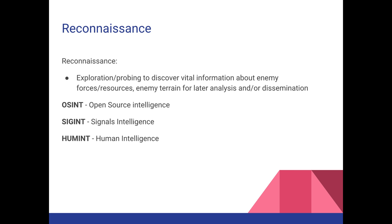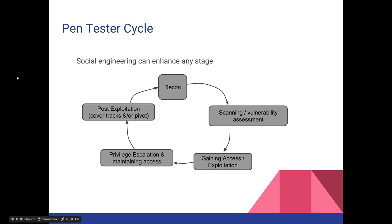There are three types of intelligence: open-source intelligence, signals intelligence, and human intelligence. These can all be gathered at any stage of the pen testing lifecycle, and social engineering can enhance any stage. Even during post-exploitation, social engineering is very easy to exploit. For example, if you've compromised a privileged user or authority — say the CEO — you can easily convince other people by impersonating that authority, sending out phishing emails which they'd likely respond to, simply because it may be in the purview of keeping their job.